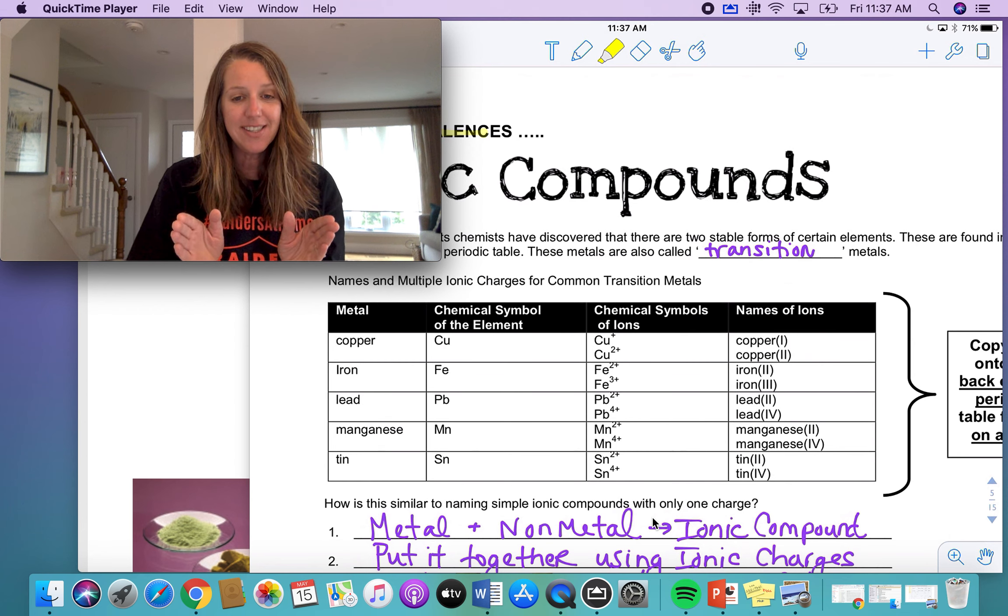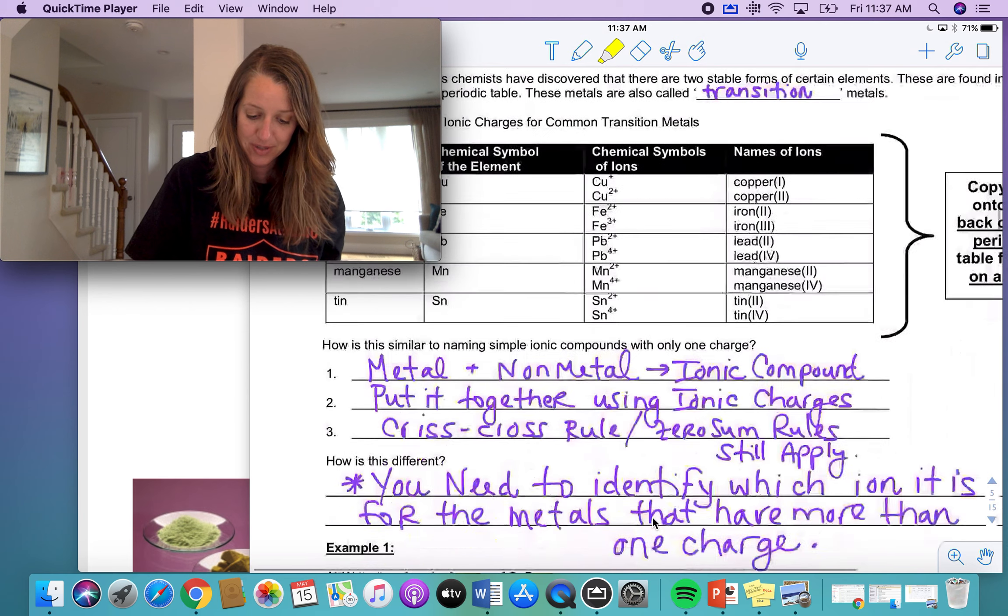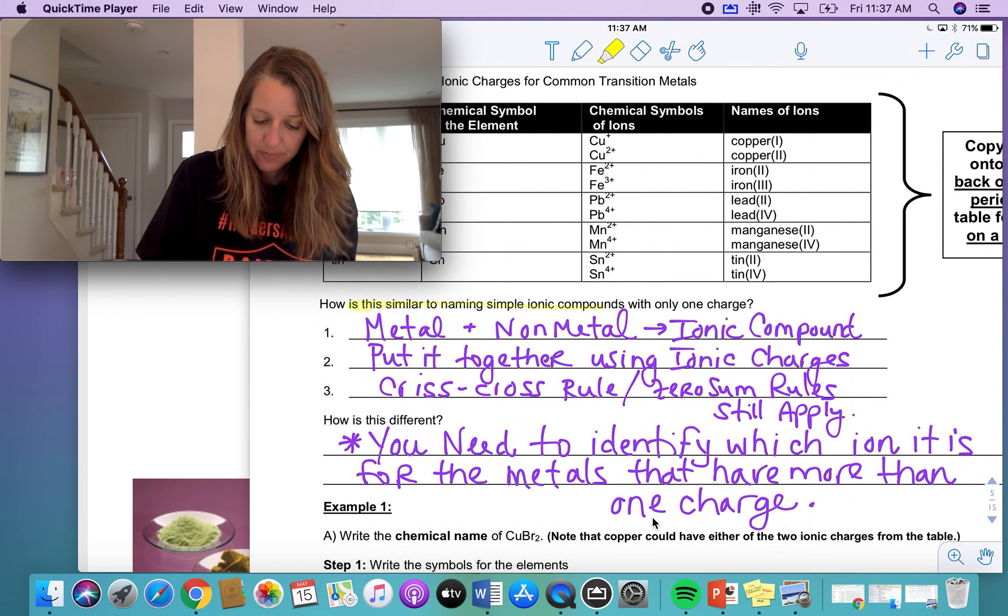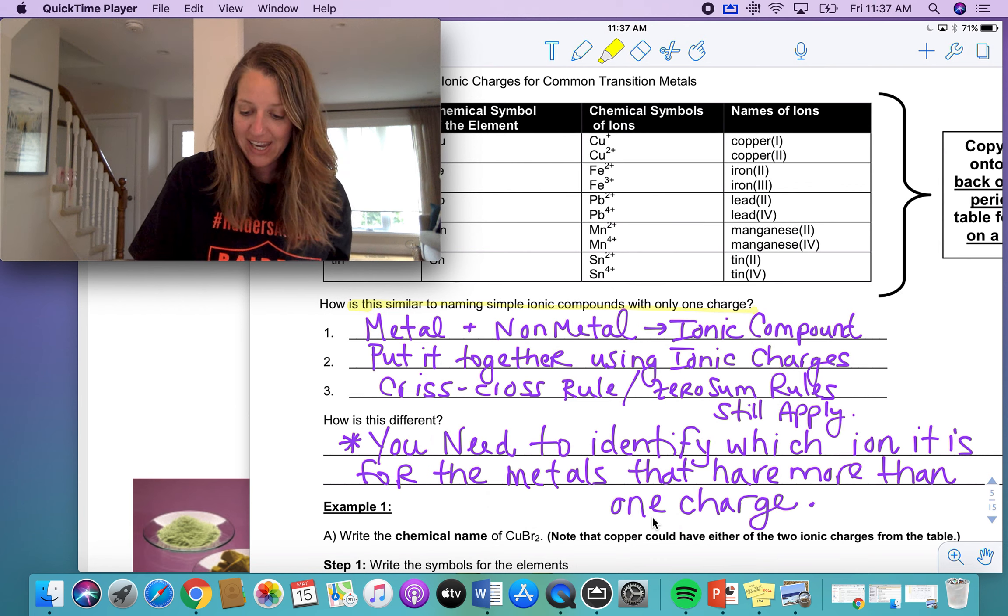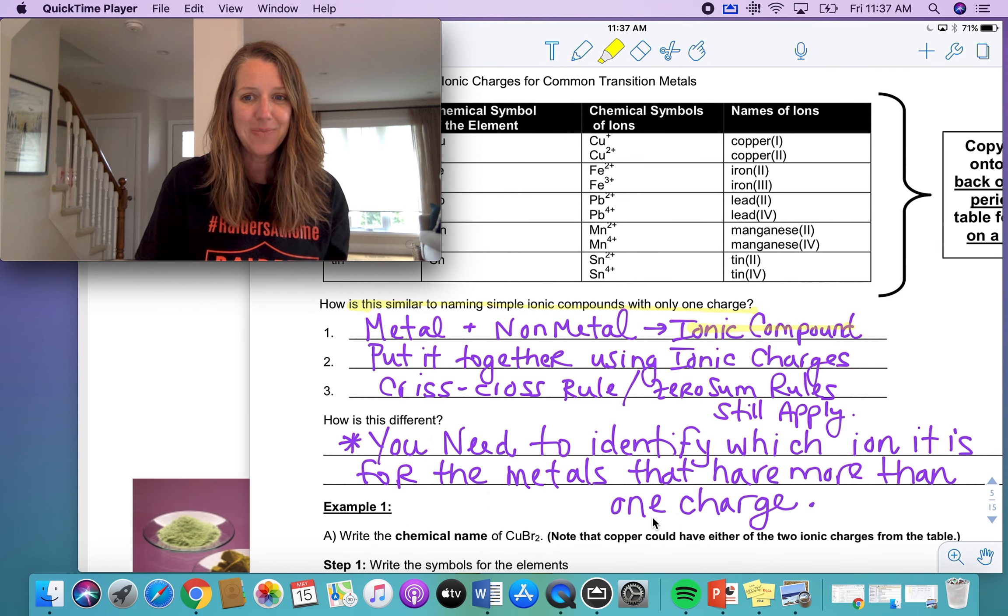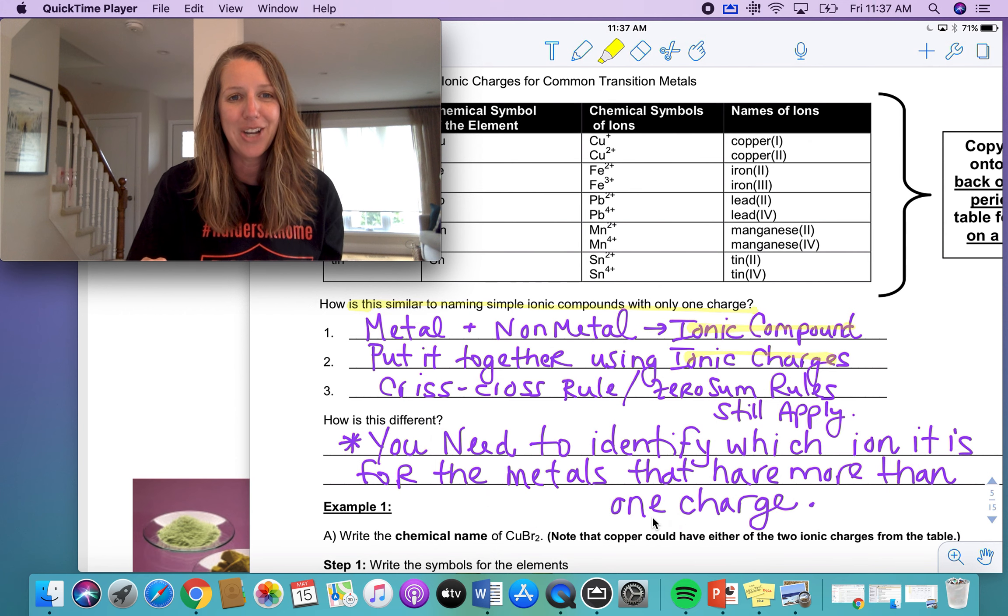So how is this similar and how is it different from what you've just learned about making ionic compounds? Similar, they are still metals and non-metals coming together. So you're still making an ionic compound. You still put it together using the ionic charges that you've got. You just might need to look at the box on your periodic table to figure out what charges are possible for those metals.